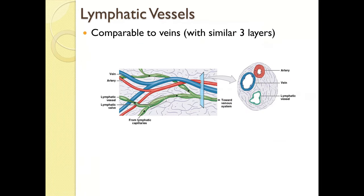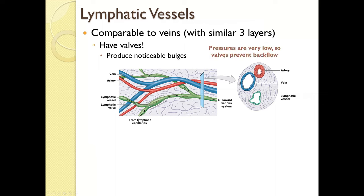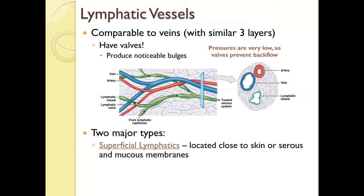From capillaries, lymph flows into lymphatic vessels. Lymphatic vessels are comparable to veins — they have similar three layers and also have valves that produce noticeable bulges giving a beaded appearance. Pressures are very low, so valves are necessary to prevent backflow. There are two major types: superficial lymphatics, located close to the skin or serous membranes (pericardial, pleural, peritoneal) and mucous membranes lining the respiratory, digestive, urinary, and reproductive systems; and deep lymphatics, which are larger vessels that accompany deep arteries and veins.